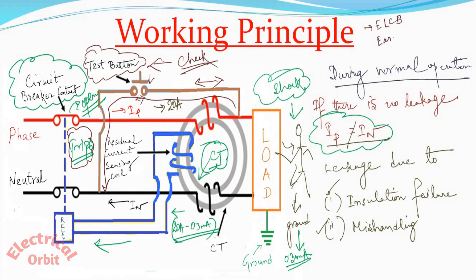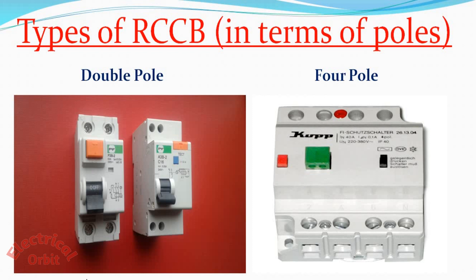This RCCB is sometimes called ELCB or earth leakage circuit breaker also, where it is used for earth leakage current detection purpose. Now there are some types of RCCB available in the market. One in terms of poles, this is double pole. You can see there is two input terminals and two output terminals in case of double pole.